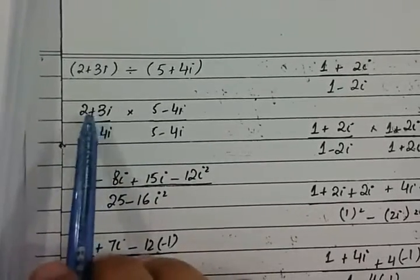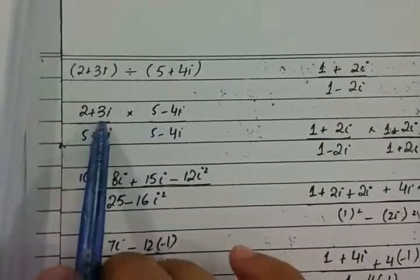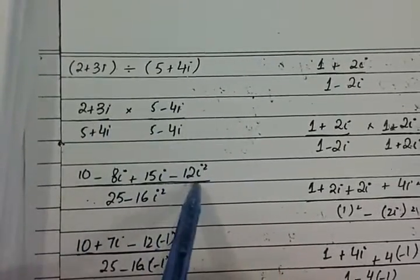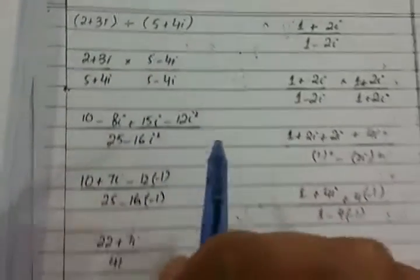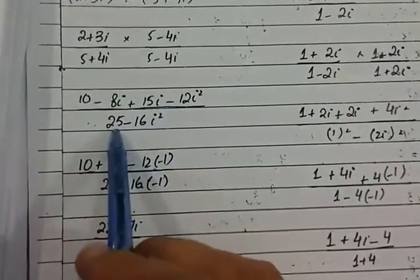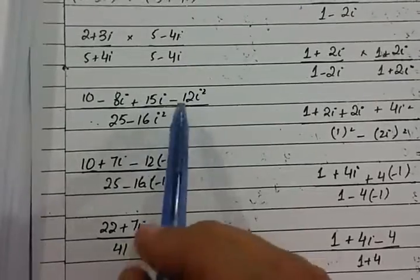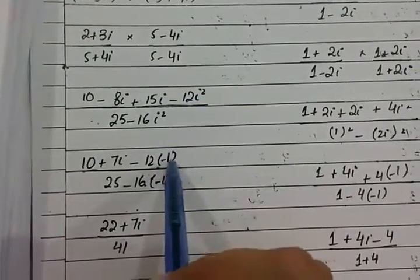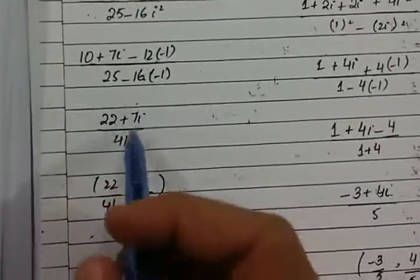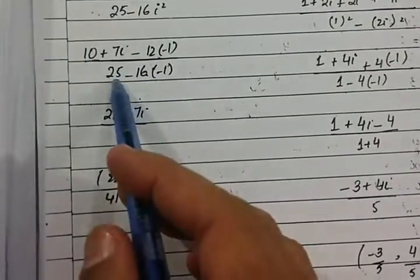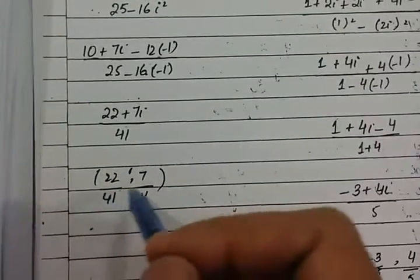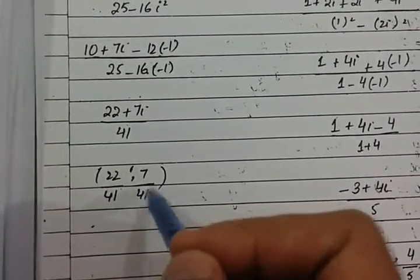2 times 5 is 10, 2 times 4 is 8, 5 times 3 is 15, and 3 times 4 is 12, with iota times iota giving iota squared. In the denominator, using the identity (A plus B)(A minus B) equals A squared minus B squared, with iota squared equal to minus 1, we get 10 minus 12 in the numerator real part, minus minus giving plus 22 imaginary terms, and 25 plus 16 equals 41 in the denominator. So the real part is 22 upon 41 and the imaginary part is 7 upon 41.